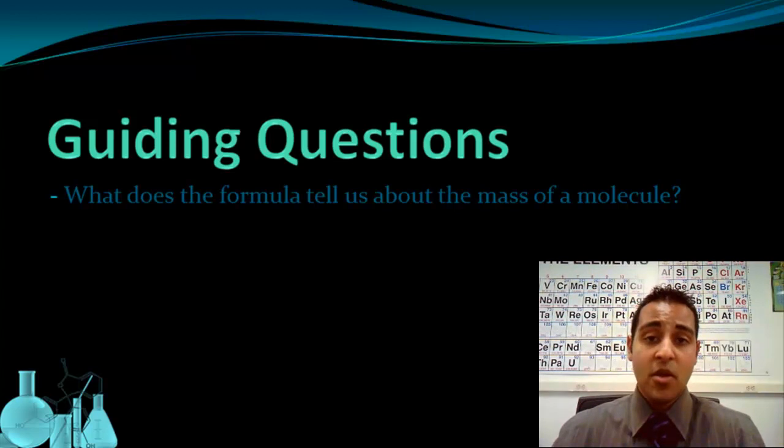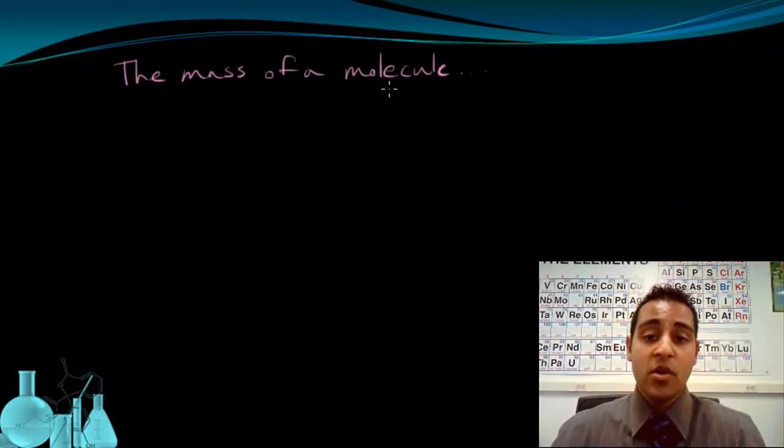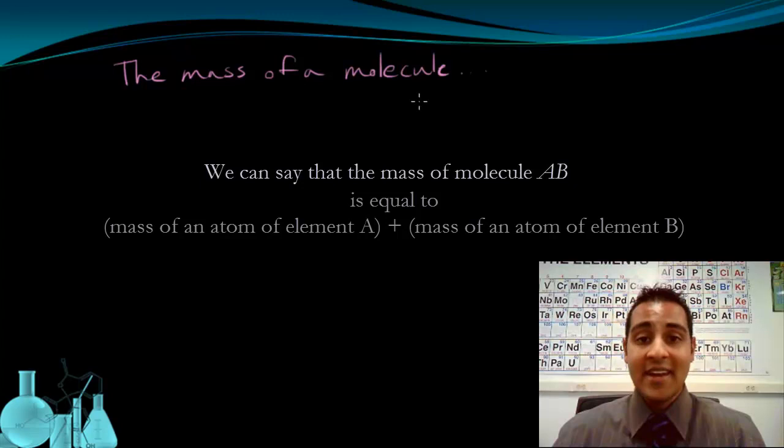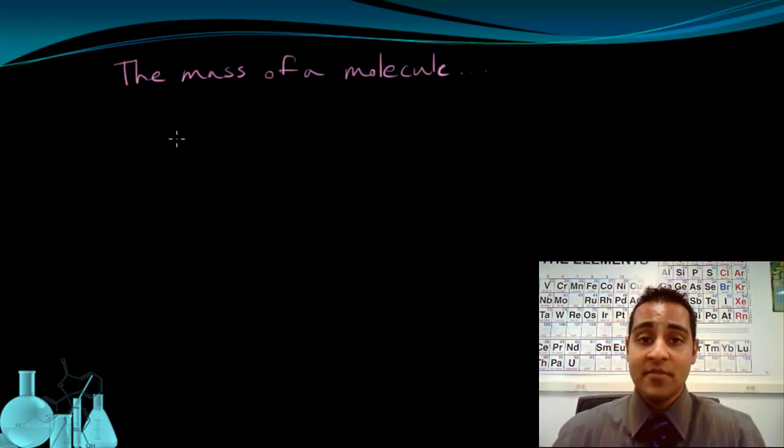Before we can talk about the mass of a molecule, we have to recognize that molecules are made of atoms, and the mass of a molecule depends on the mass of the atoms that make it up. Fortunately, we can easily find the mass of any atom by looking on the periodic table, and then we can combine those masses to get the overall mass of the molecule. Let's look at an example of this.